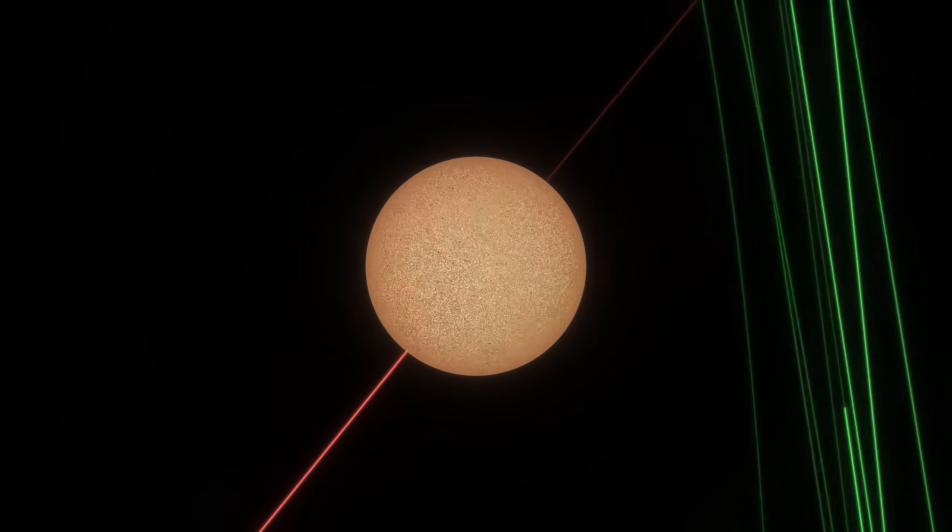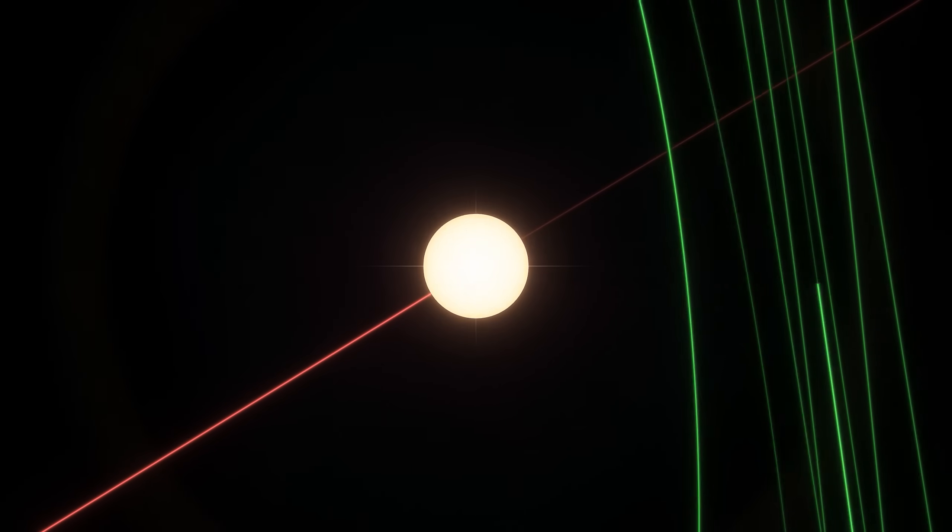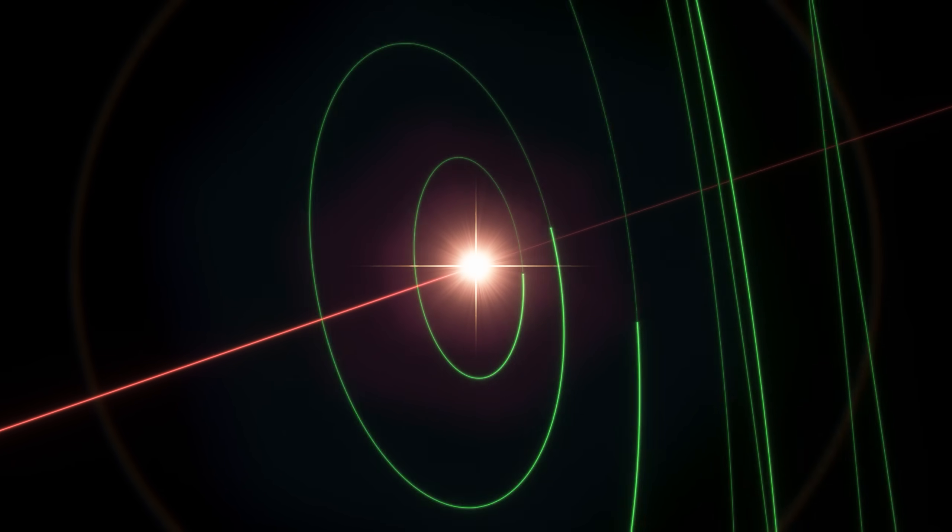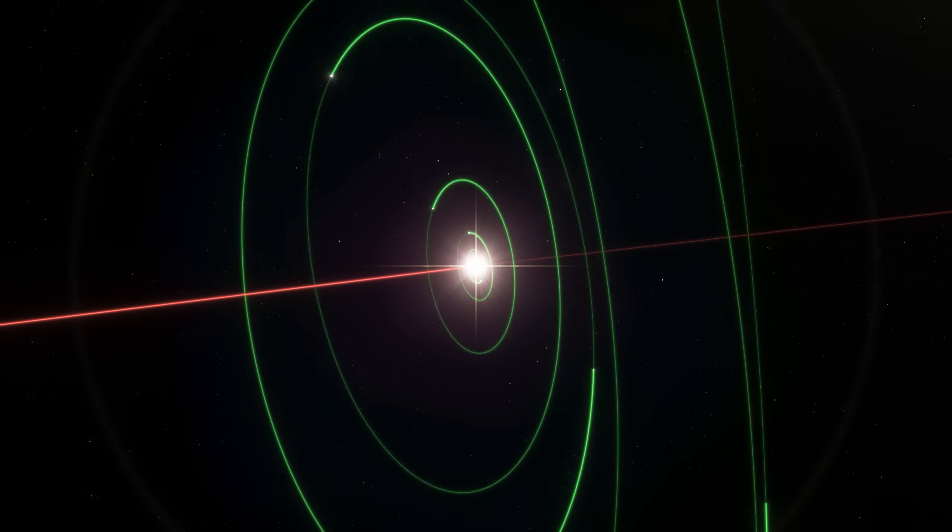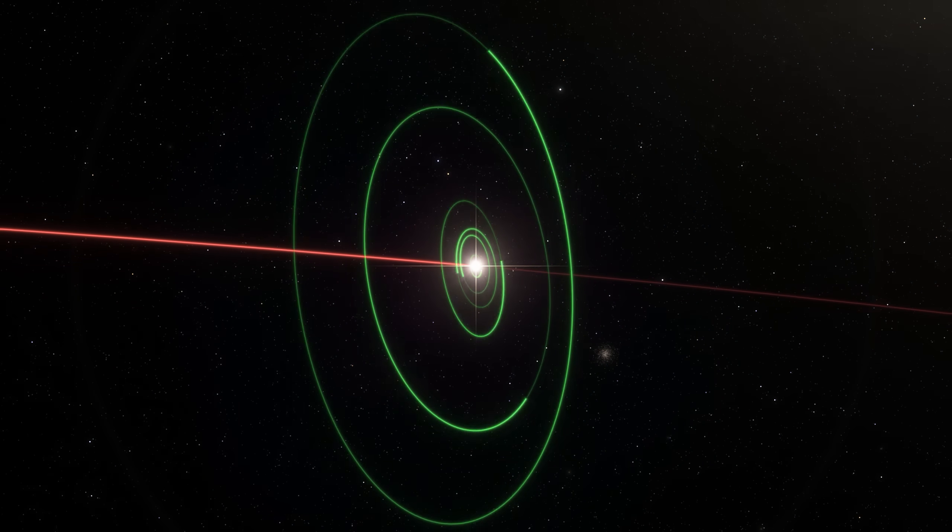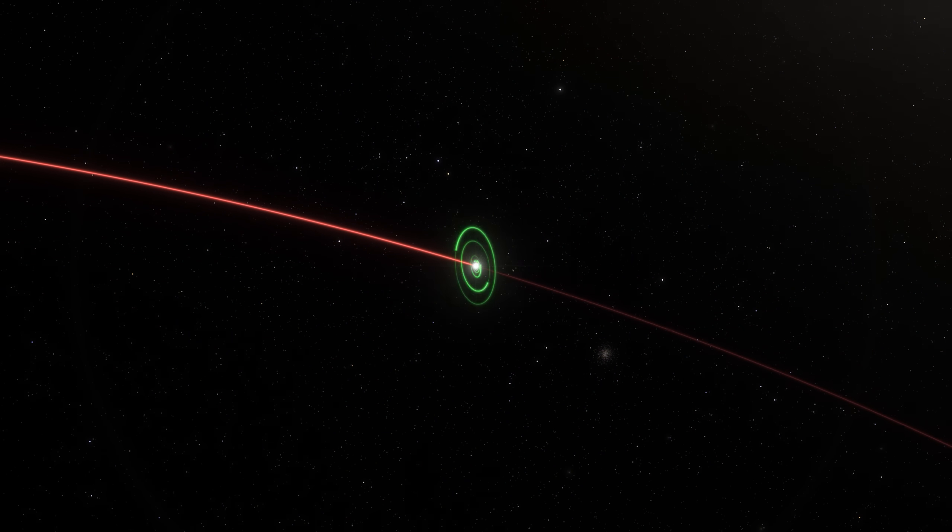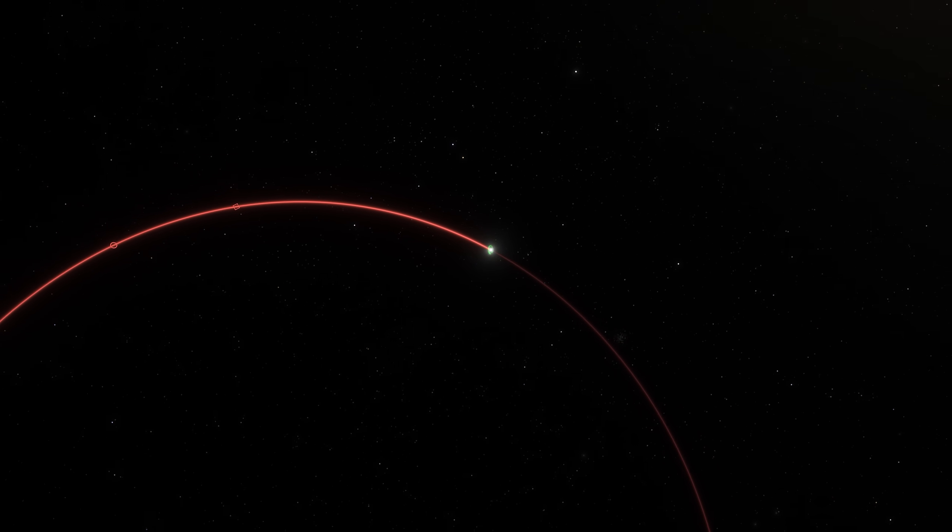However, there is a scenario where we could be in a binary star system with a supergiant, and still be on a habitable planet. You see, binary stars can orbit very far apart, taking thousands of years to complete one orbit.